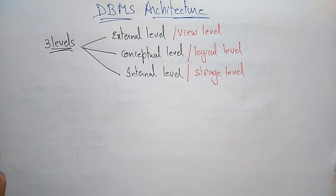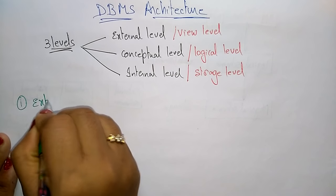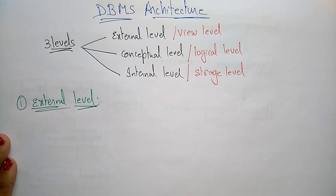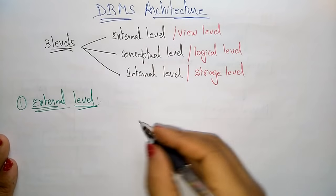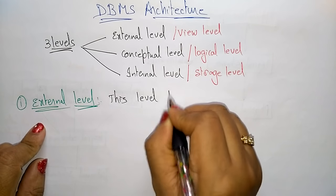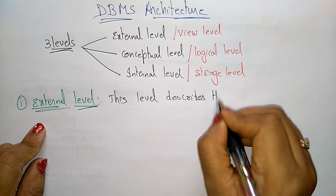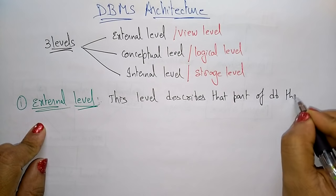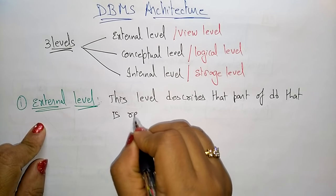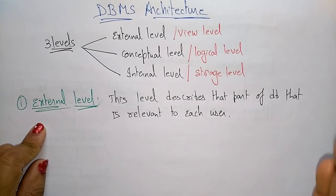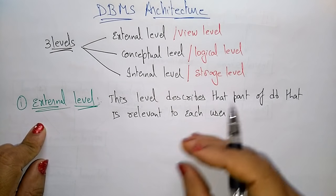The first level is the external level. This level describes that part of the database that is relevant to each user. It mainly holds the information that is relevant to the user, so you call it the external level.